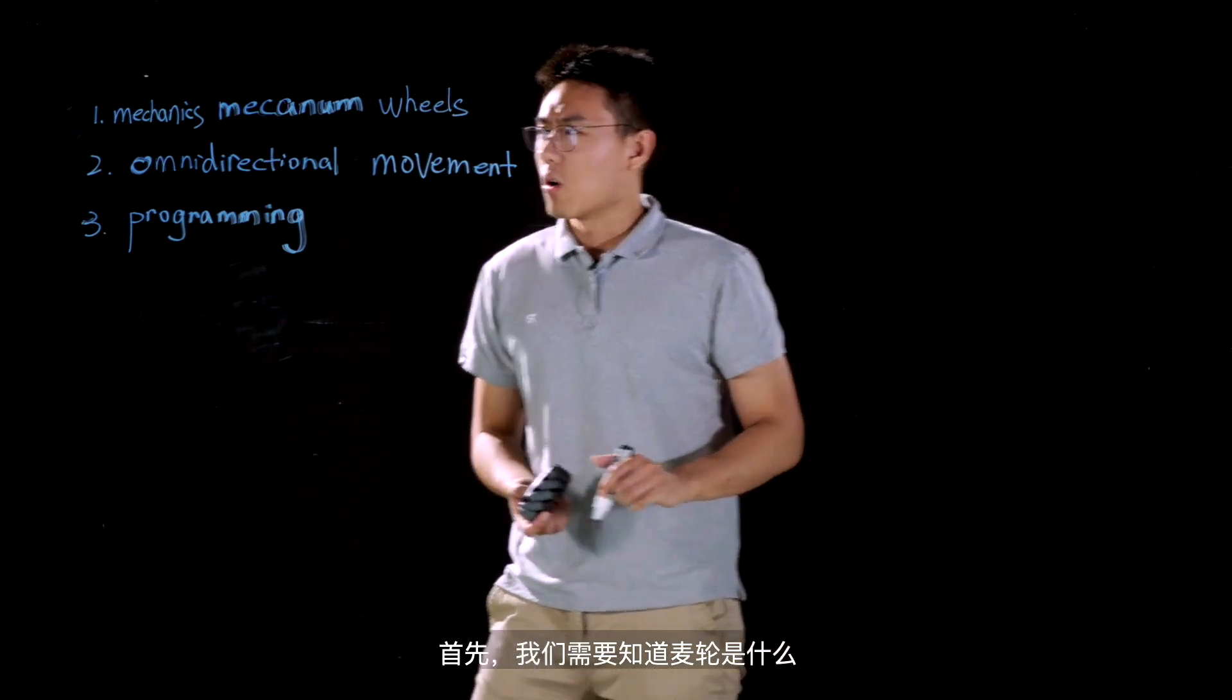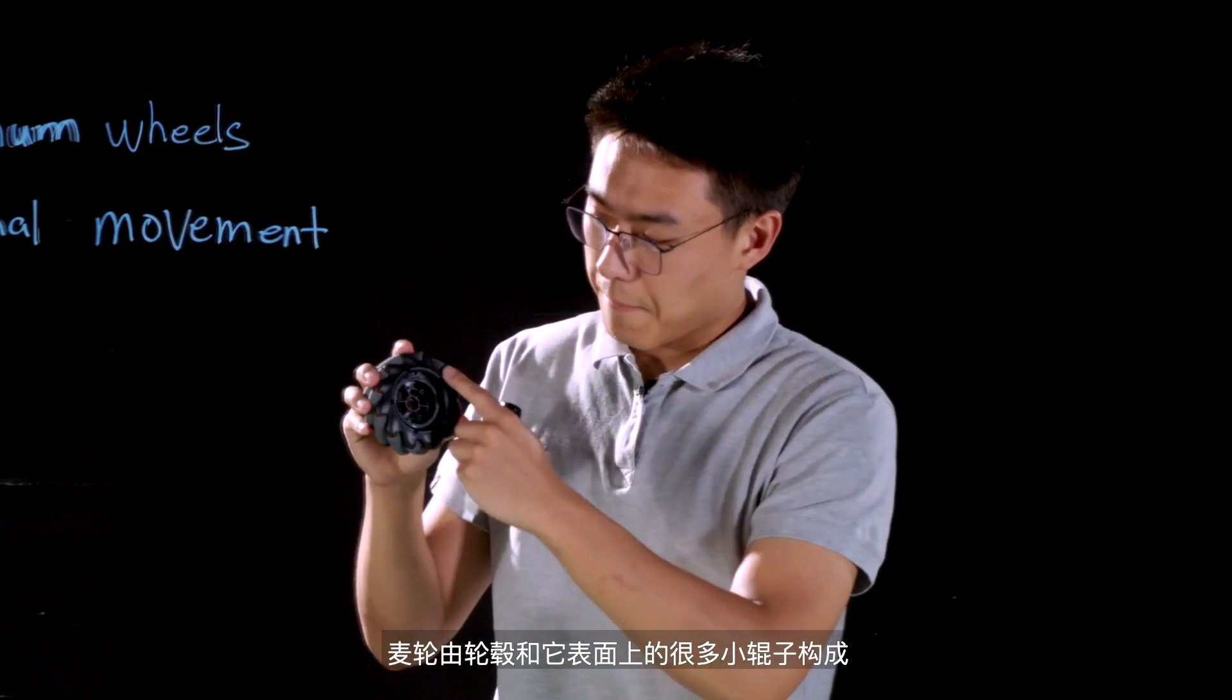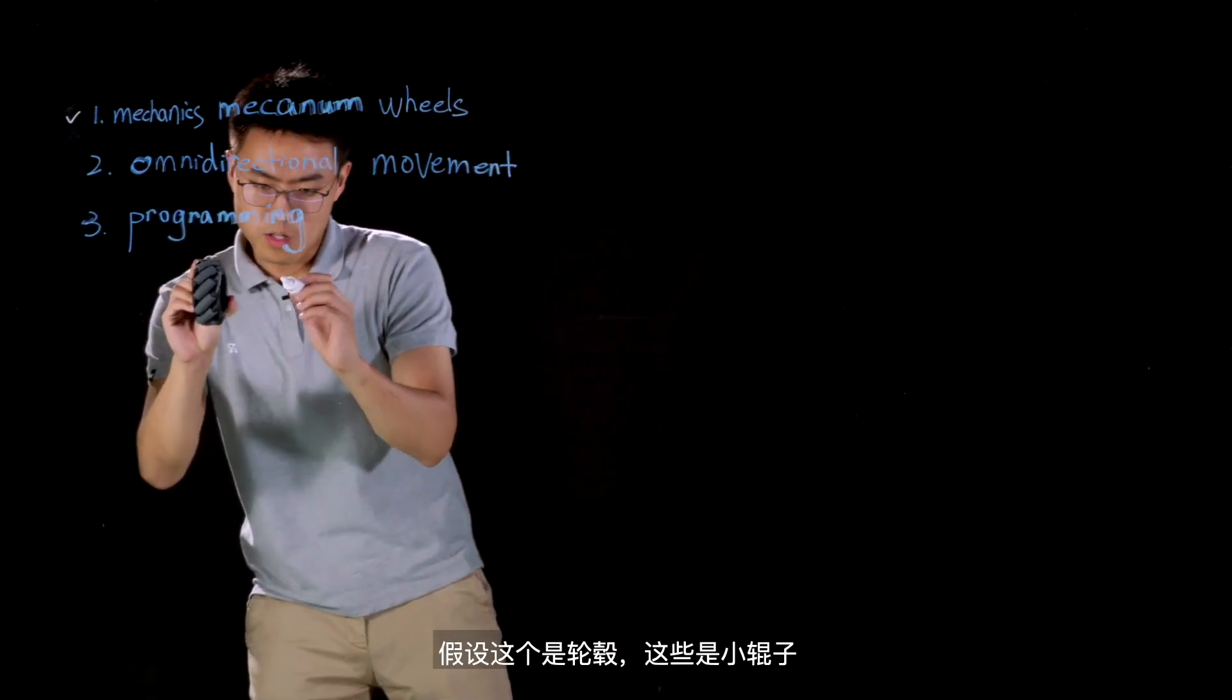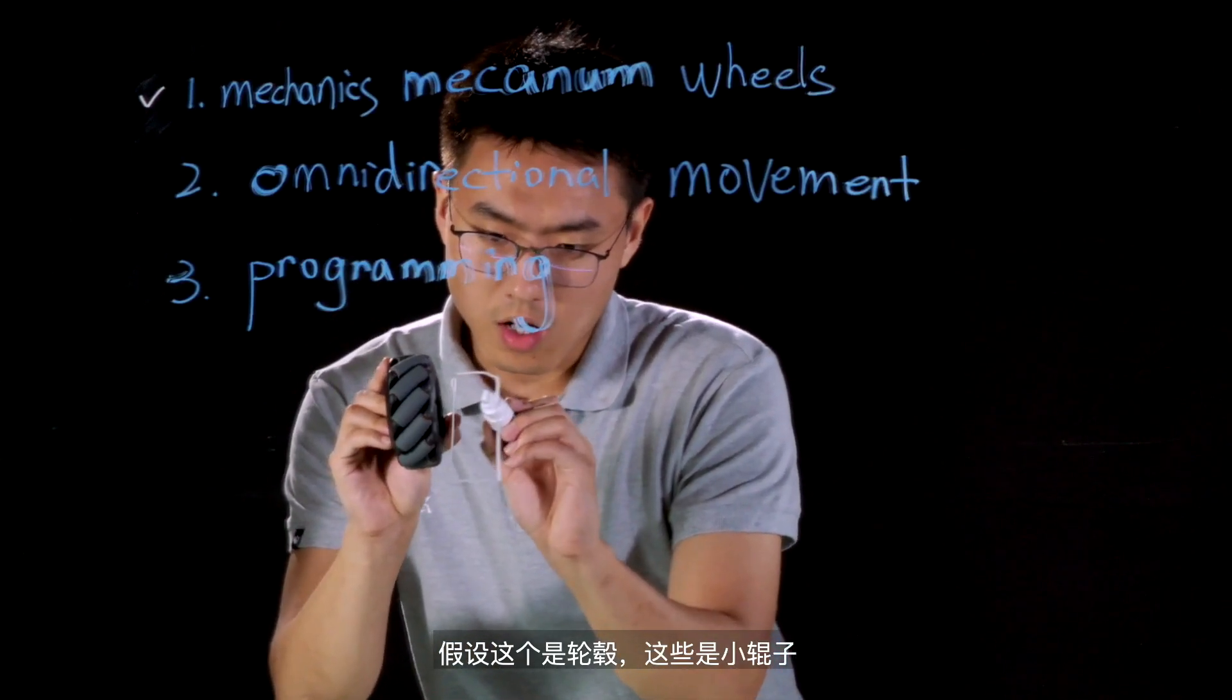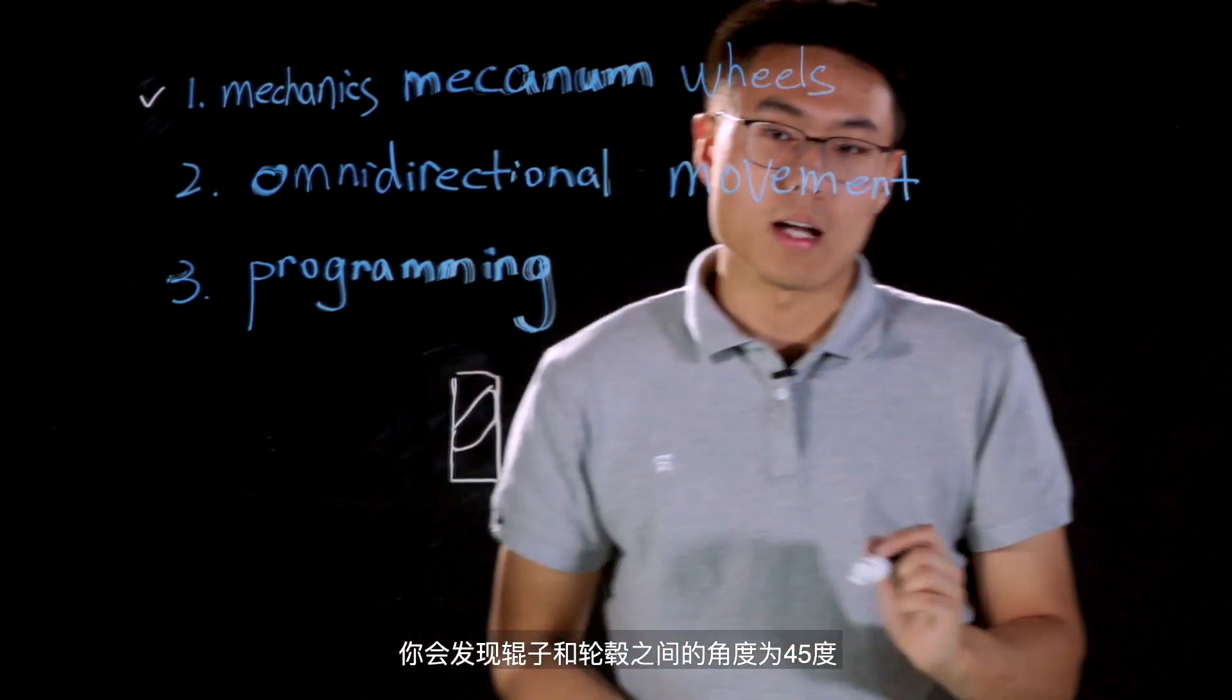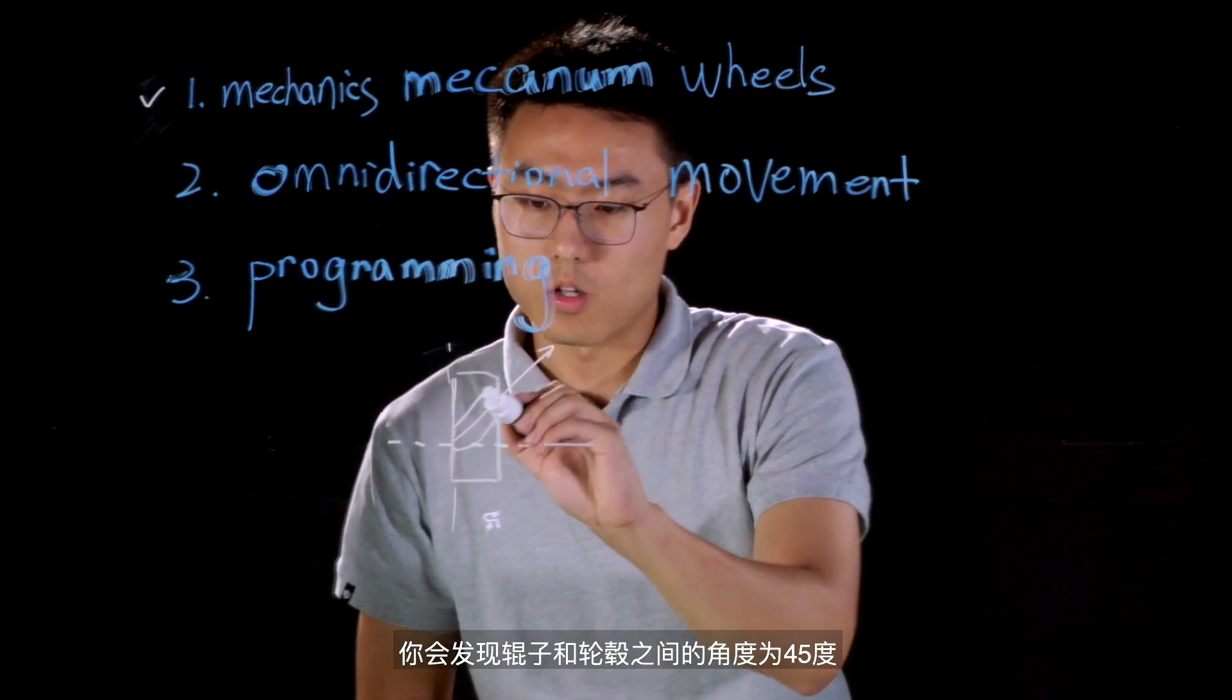First thing first, we need to know what the Mecanum wheel is. A Mecanum wheel has a hub with some rollers on its surface. So, if this is the hub, and here are one of the rollers, you may notice that the angle between the roller and the hub is 45 degrees.